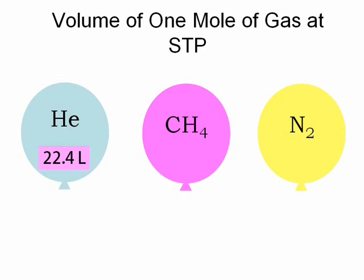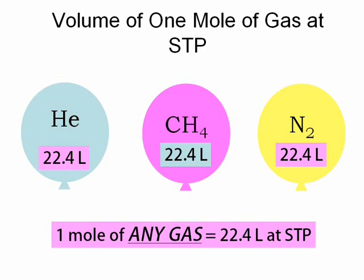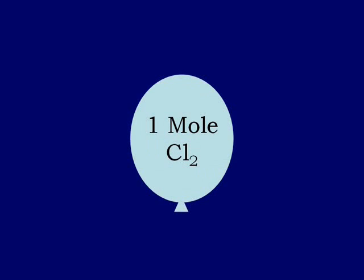So one mole of helium — that's how big my balloon would be. Now, if I had one mole of CH4 (that's methane) at STP, its volume would be 22.4 liters. One mole of nitrogen molecules at STP? Also 22.4 liters. In fact, that statement is true of any gas — as long as it is at STP, its volume is 22.4 liters. We have STP because the volume of a gas depends on temperature and pressure as well as the number of molecules.